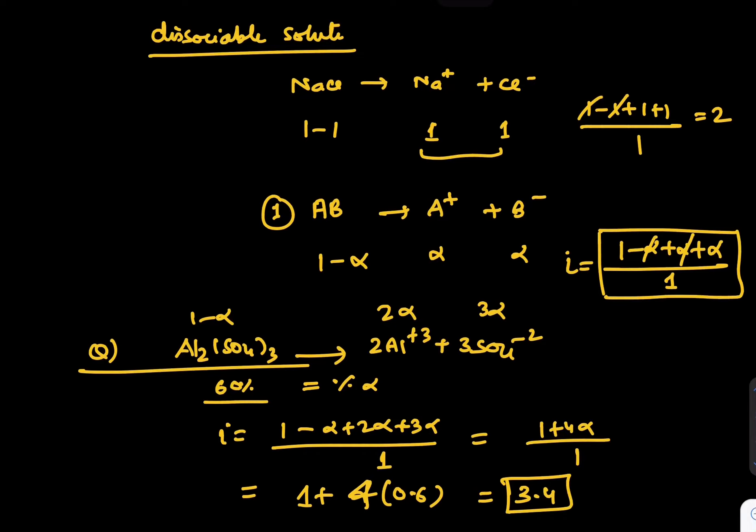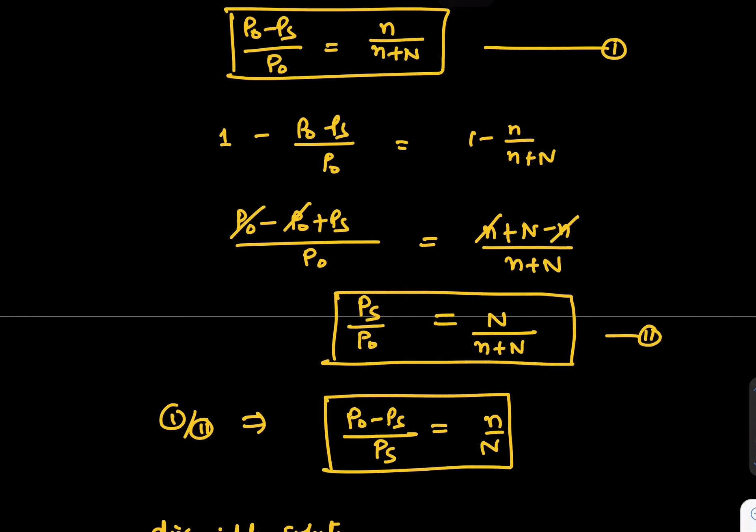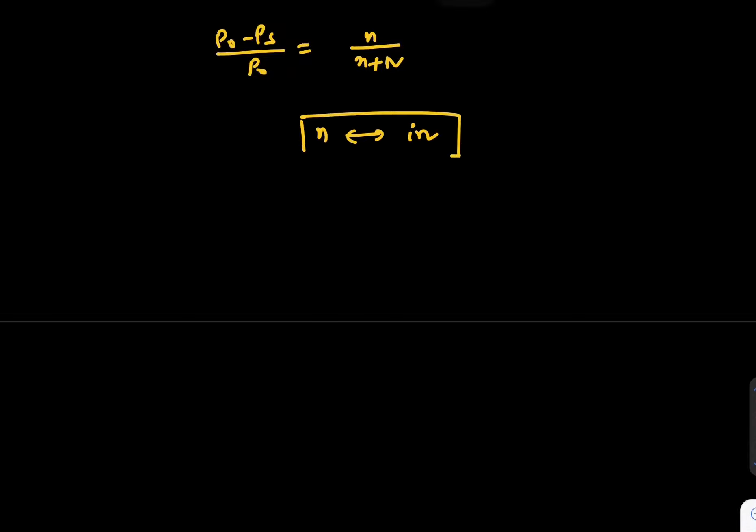This is the I value. I tells us actual number of particles in the final solution. If we apply this modification in this discussion, P0 minus Ps upon P0, which we wrote as N upon N plus N, you can modify N by IN. That's the only modification you have to do.